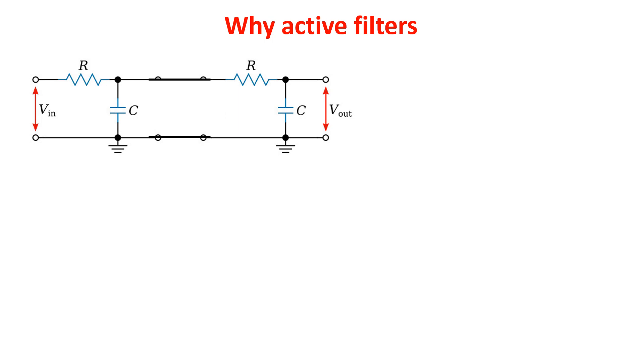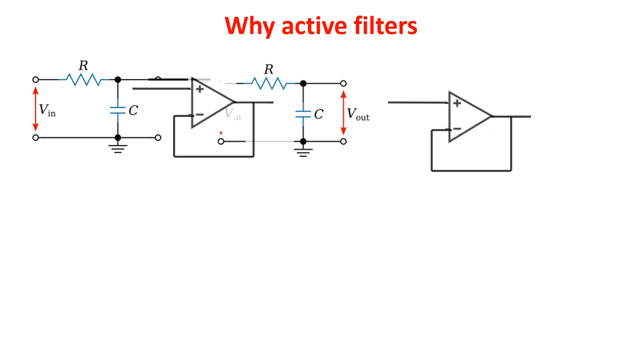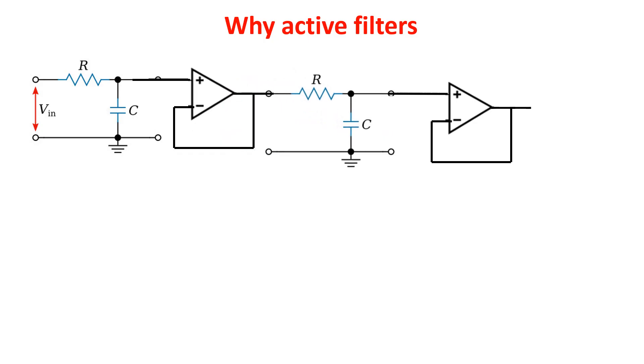In order to decouple these two stages we can use an active element such as an op-amp, which has a large input impedance and a low output impedance. The circuit is a second order low-pass filter in which the second stage doesn't load the first one, just as the load does not affect the filter. In this case we use the op-amps as buffers.